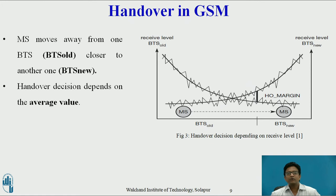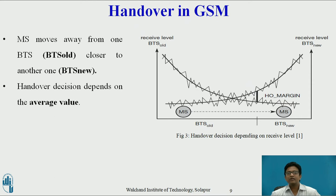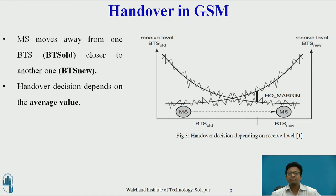The ping-pong effect occurs when an MS is handed over from one cell to another cell but quickly handed back to the original cell. This causes unnecessary signaling on the Um interface or the A-bis or A interface, and can indicate incorrect handover parameter settings or a dominance problem in the area.